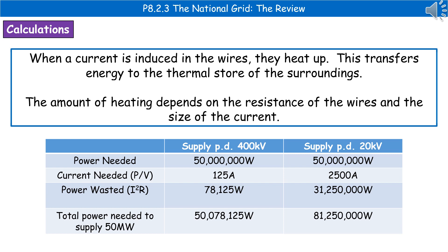To illustrate this, there's a table showing two different voltages: a supply potential difference of 400 kilovolts and one of 20 kilovolts. If we need 50 million watts for each, dividing power by voltage gives the current — 125 amps at 400 kilovolts, and 2,500 amps at 20 kilovolts.